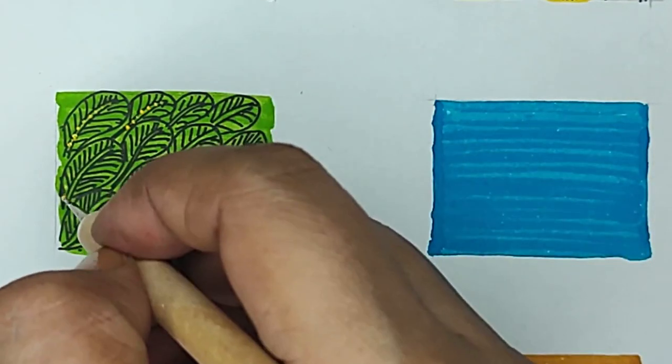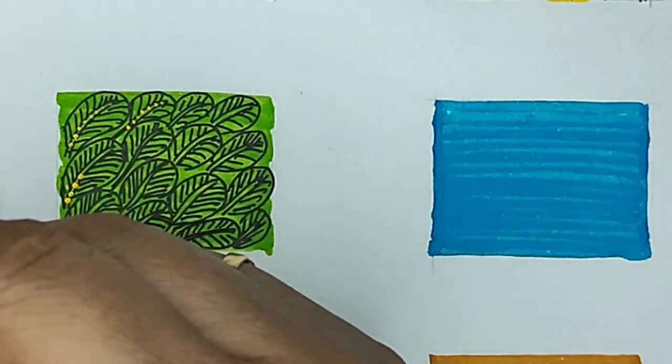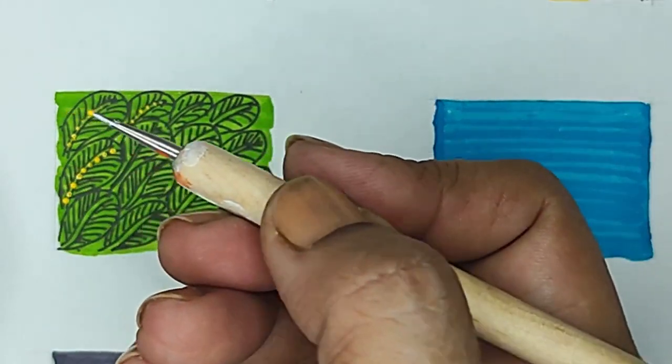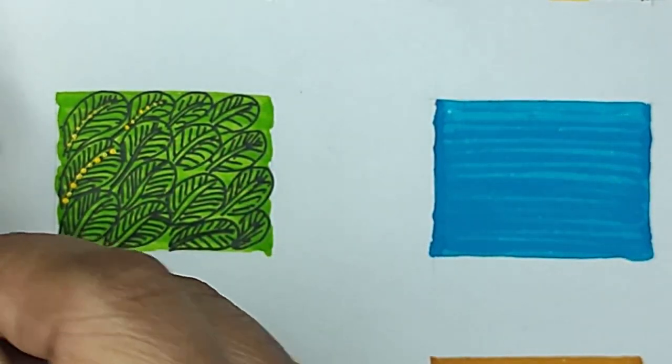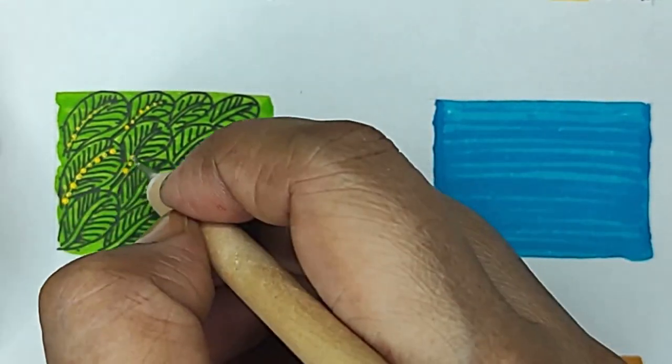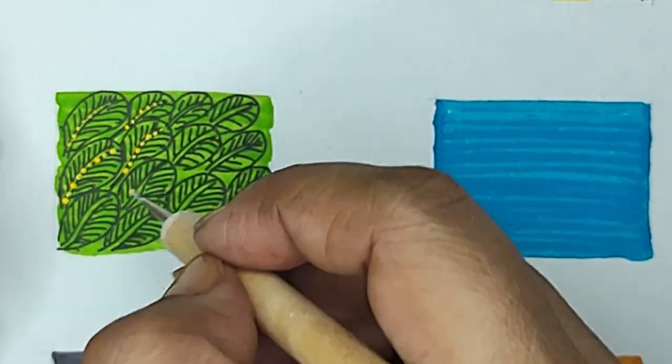Now here I used the nib also and I am doing it with the dotting tool as well. So you can go ahead and find anything that is a little pointy and would give you the desired circles or dots.